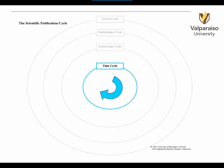The inner circle represents the time cycle. The time cycle varies with scientific discipline and individual project. While some research can get on the fast track and become public quickly, other projects may take years.